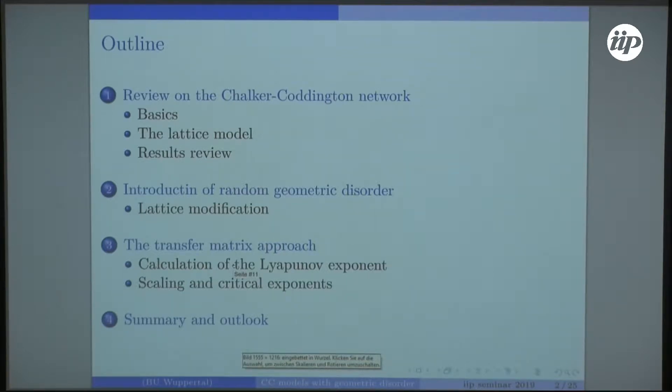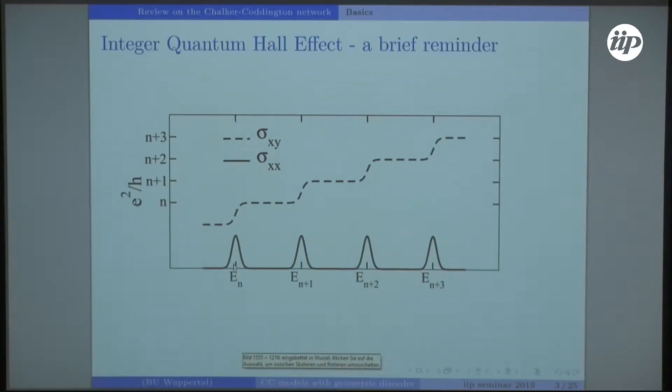To do this, I will first briefly remind you of the Chalker-Coddington network, and then I will introduce random geometric disorder and tell you how to use the quantum transfer matrix approach to evaluate the correlation length exponent.